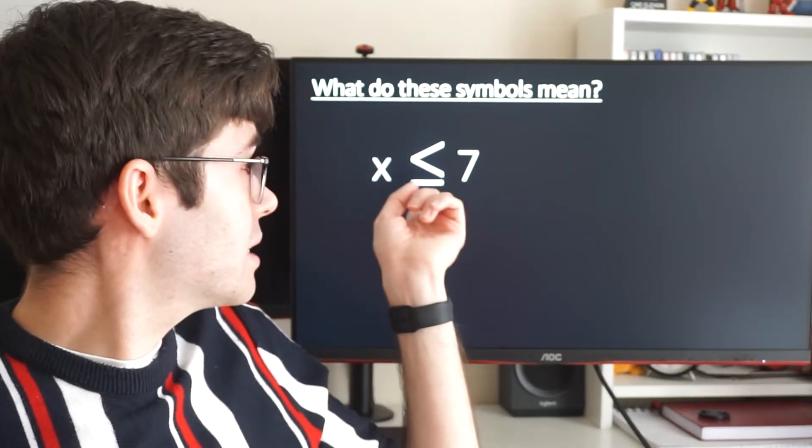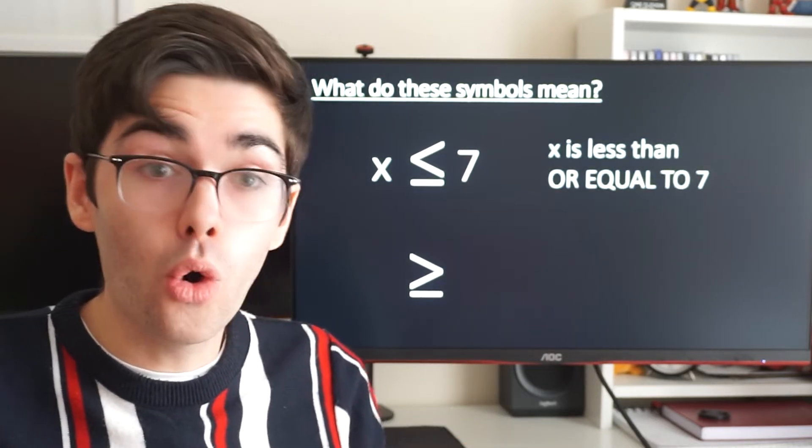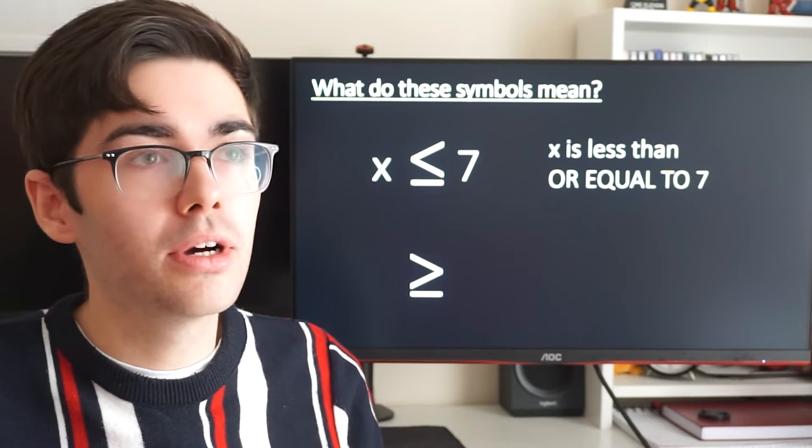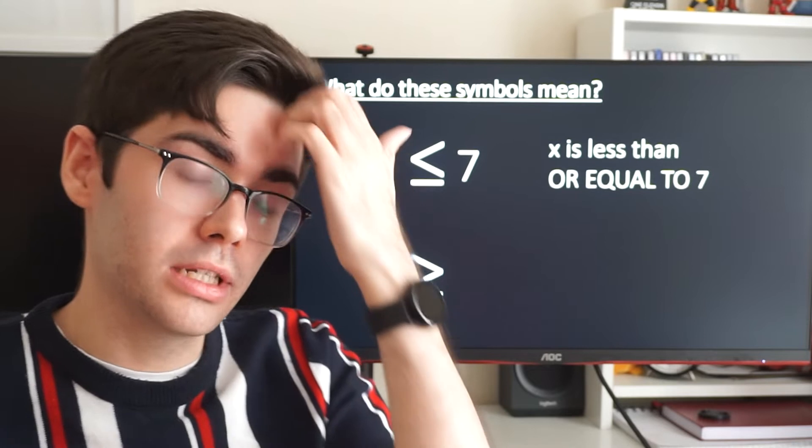If I put some numbers in here, x, that symbol, and then seven. That means x is less than or equal to seven. So in other words, x could be one, two, three, four, five, six, or x could be seven. It could be equal to it. But if I just said x is less than seven, it couldn't be equal to seven. It had to be less than.